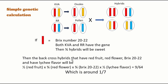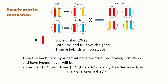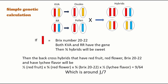If we want a backcross hybrid that has red fruit, red flower, high sweetness, and also lychee flavor, the probability calculation is: 1/2 for red fruit, times 3/4 for red flower probability (since both KVA and RR have red flower, similar to the sweet gene situation), times 3/4 for sweetness, and times 1/2 for lychee flavor. When you multiply all the probabilities together you get 9/64, which is around 1 in 7. That means in this backcross we'll have about a 1 in 7 chance to get all the features we want — that's pretty good odds.